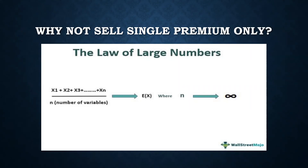Now you understand why the person using only a single punch ended up standing in just his boxers — that's why the animation now makes sense. That's the main reason. Of course there are many other differences between single premium and regular premium, but this is the core issue: the investment risk problem of regular premium and why insurance companies don't sell only single premium policies.